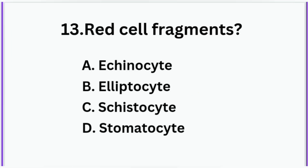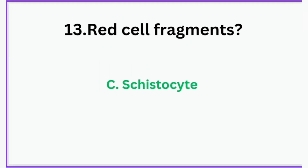Red cell fragments are: Option A: Echinocyte, Option B: Elliptocyte, Option C: Schistocyte, Option D: Stomatocyte. These questions are familiar to you because they are taken from the previous videos. The correct answer is Option C — Schistocyte. Schistocyte is also called fragmented RBC.